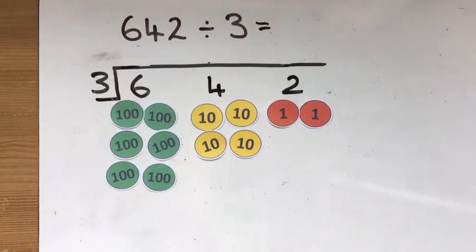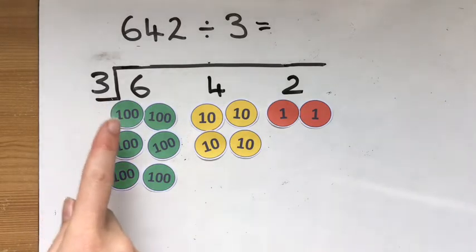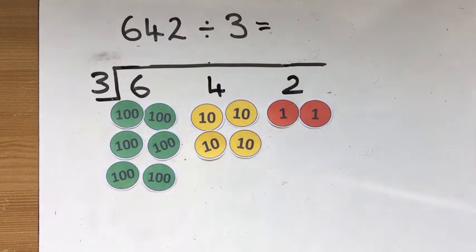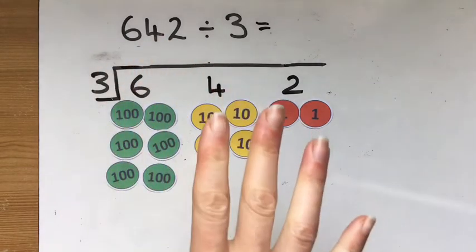There is another way that you can look at this to do division. Some people might find that this way makes more sense to them. Others might find it more complicated. So take whichever way it works for you. The other way that you could look at it is that we're needing to share each part into three equal groups. So instead of looking for groups of three, we're looking for three equal groups.